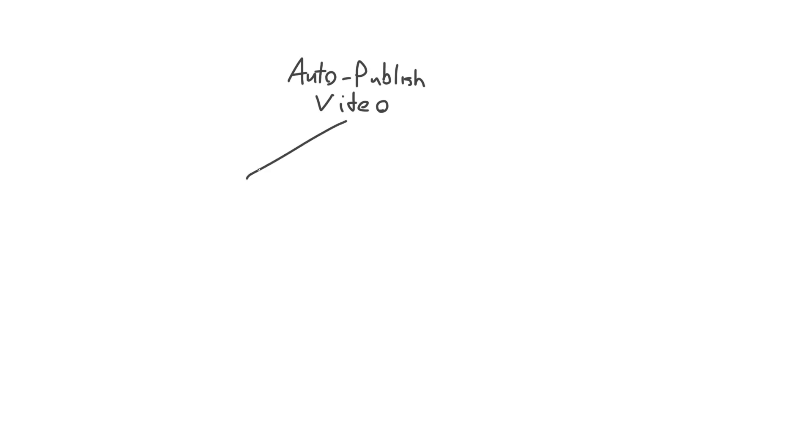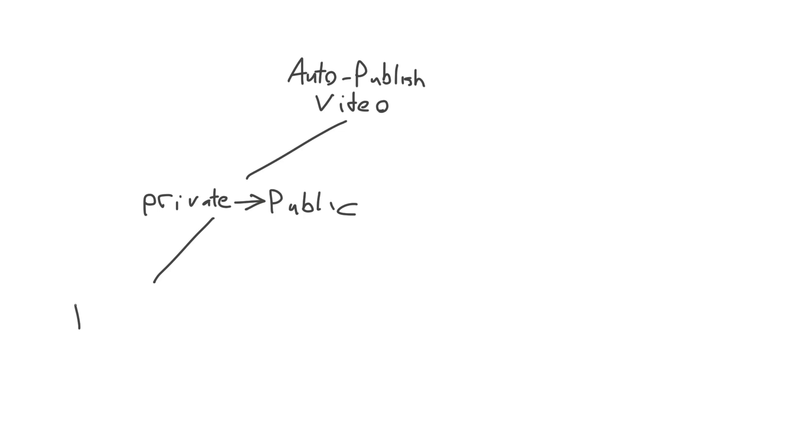With any programming project, you want to take a big idea and break it up into smaller and smaller components. With this project, I think there are a couple different areas we can split it into. There are two real main components: first, we need to be able to write code that can turn a YouTube video from private or unlisted to public. That's one aspect of this project, and there are really two ways we can go about it.